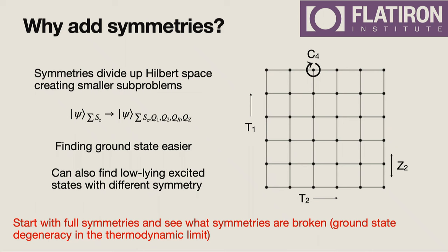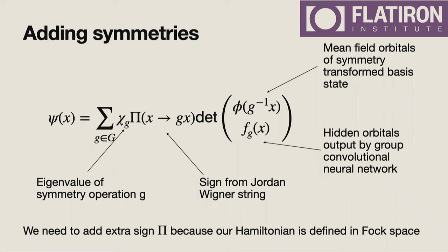The strategy is to start with all the symmetries — as symmetric as possible — and then try breaking some symmetries to see what happens. Our neural network orbitals are now a group convolutional neural network. We also have to include a fermion sign — a π sign — into our wave function, because if we define our Hamiltonian in Fock space, the ordering of the fermions will break lattice symmetries. So we stick this sign back into the wave function by hand.